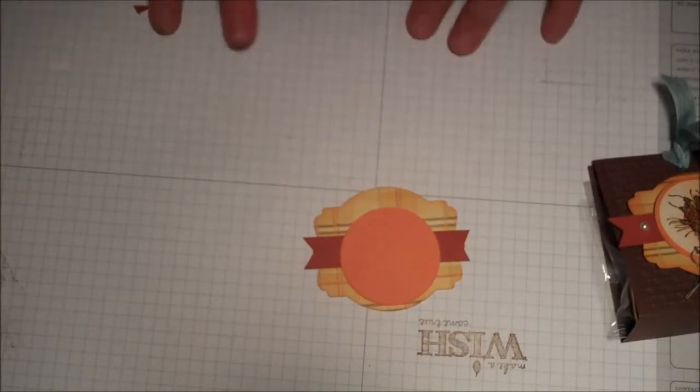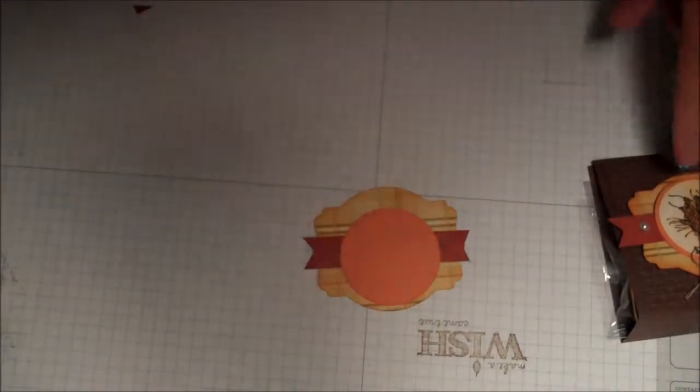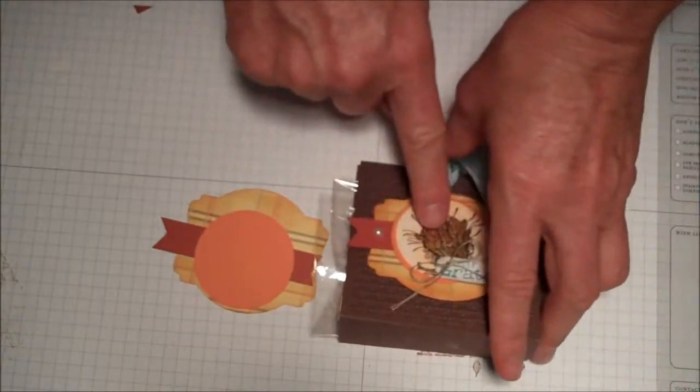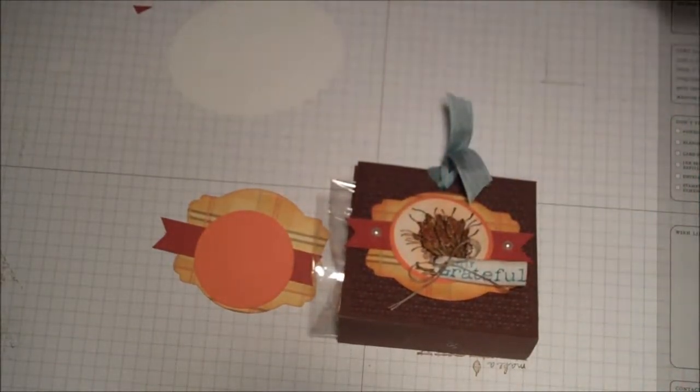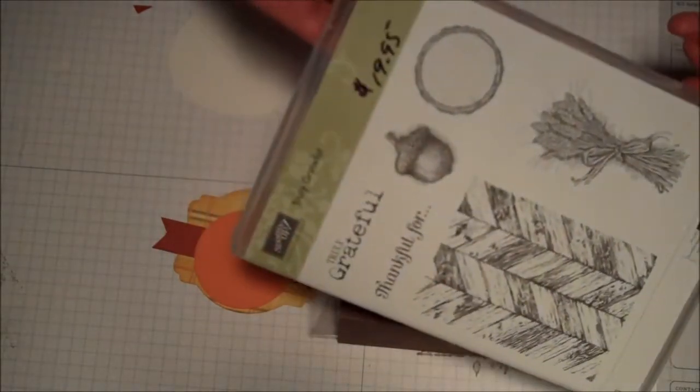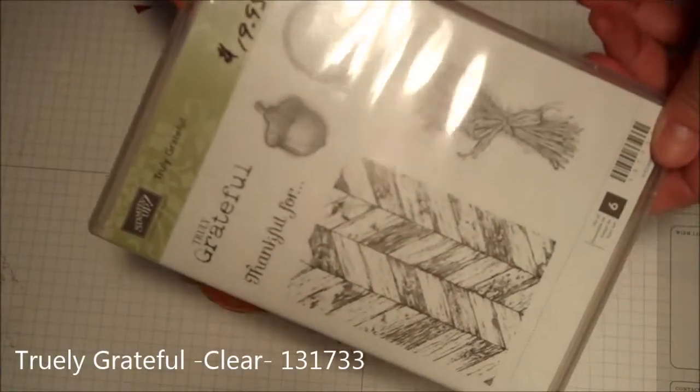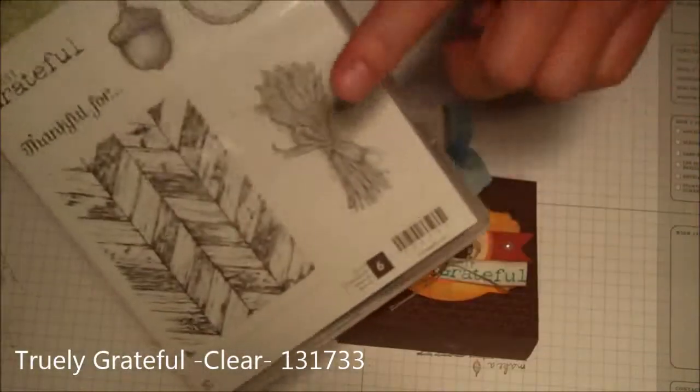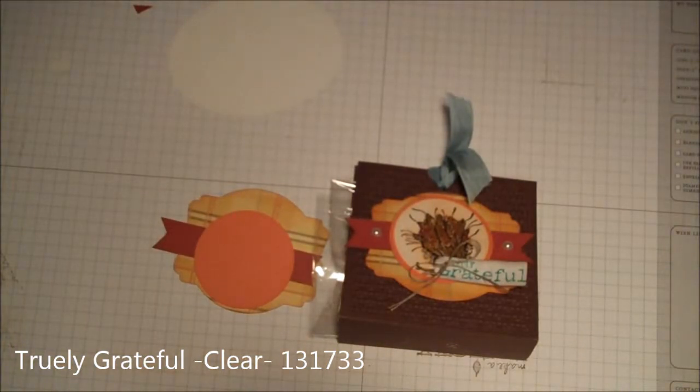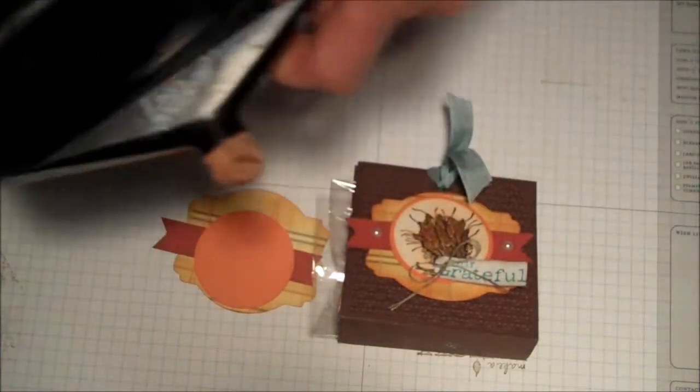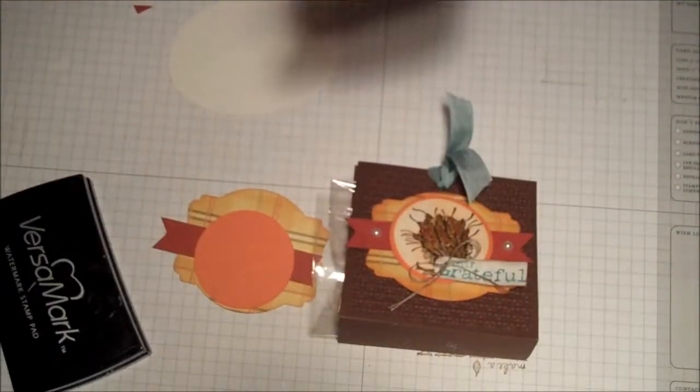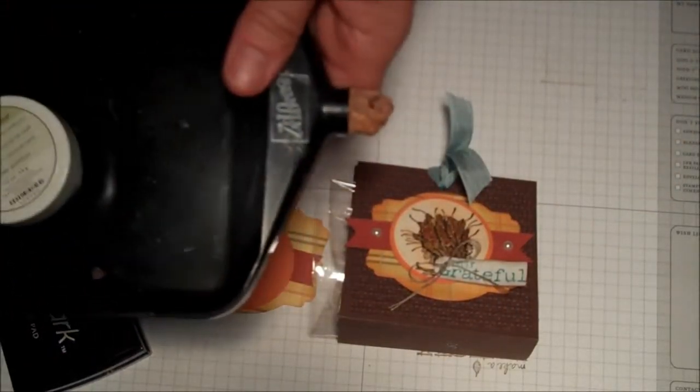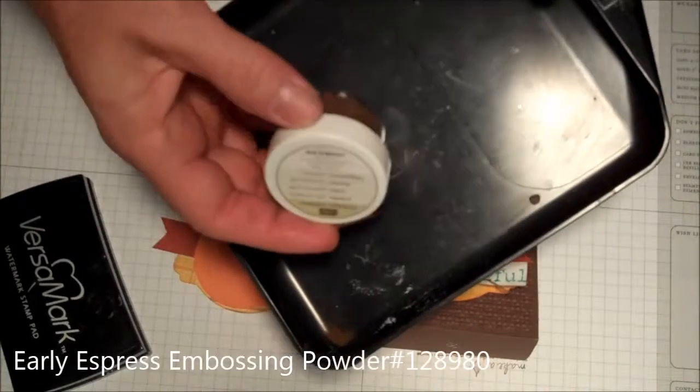The next step is to emboss the wheat on the top. The set I used for that is Truly Grateful from the holiday catalog, and I use this stamp right here. I'm using a Versamark pad and Early Espresso powder.